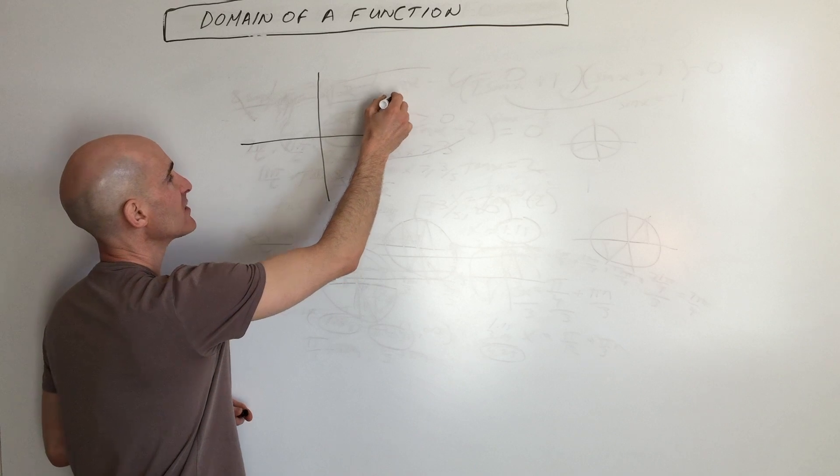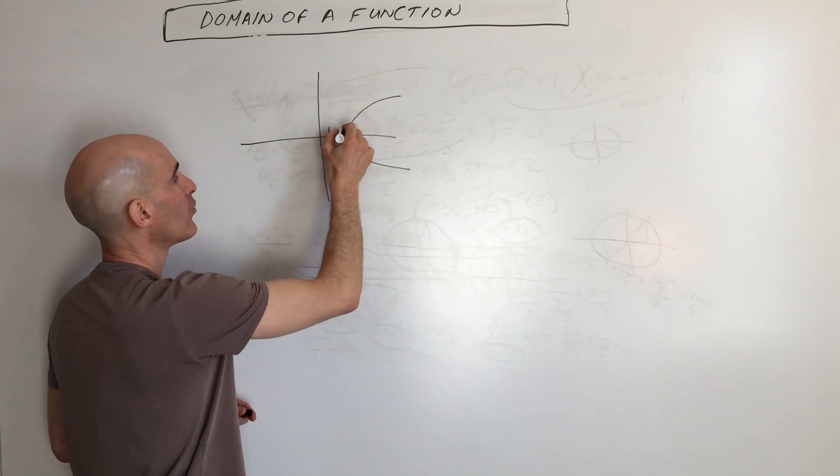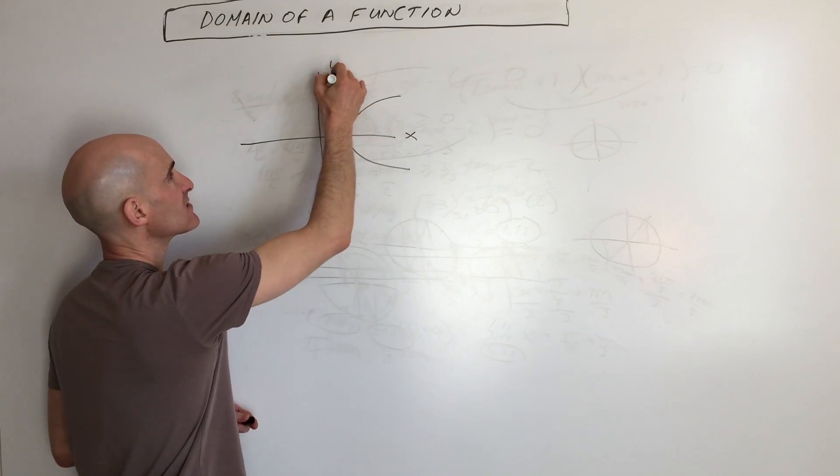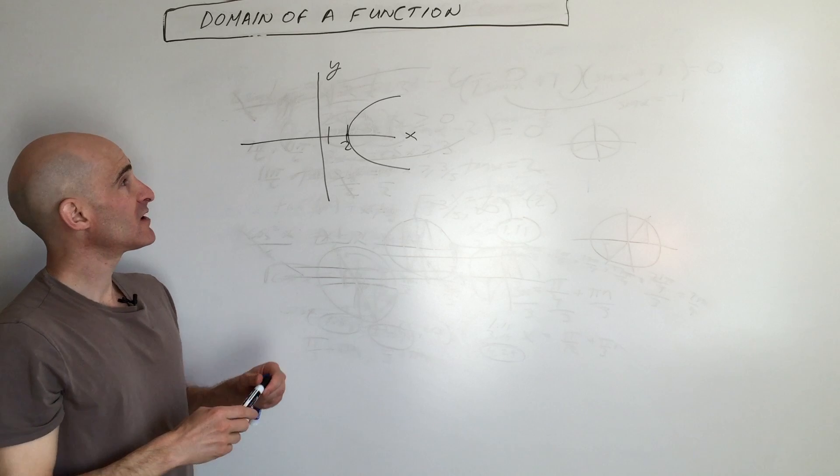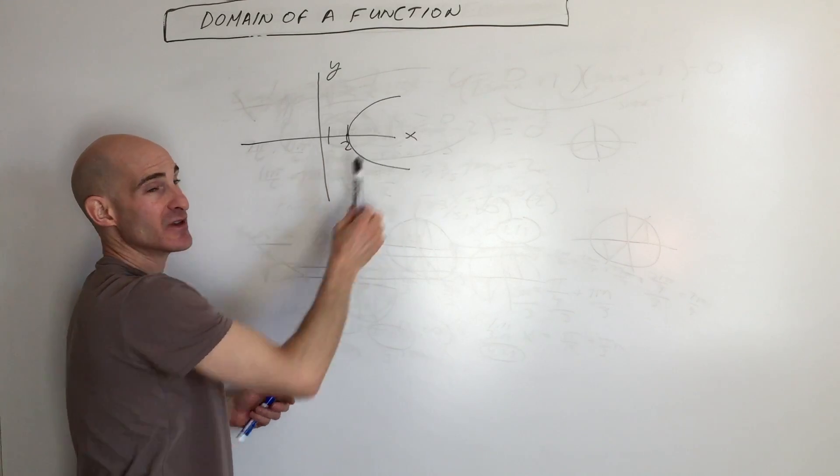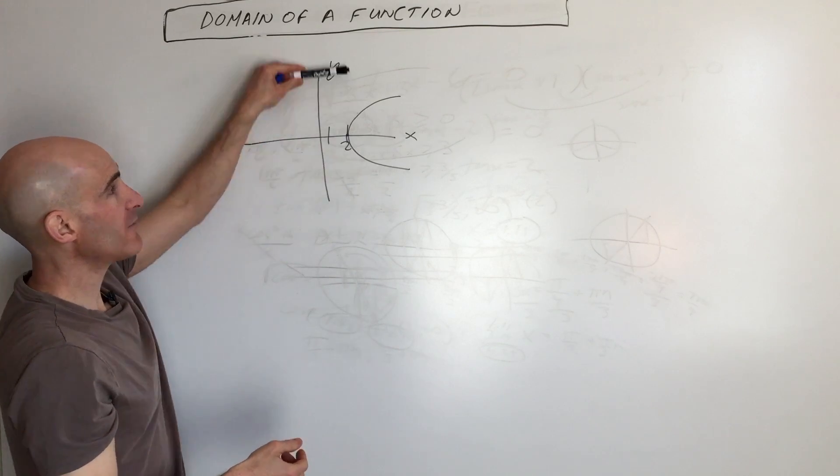One, two. Okay, right there. This is the x-axis. This is the y-axis. So what you can think about is domain is what the x values can be, and the range are what the y values can be.